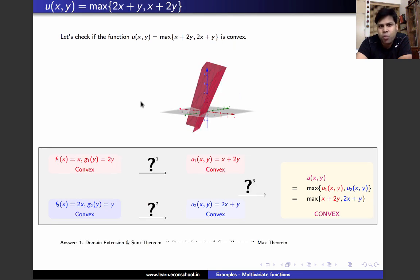In exactly the same way, we can show that u(x,y) equals max of x plus 2y comma 2x plus y is a convex function.